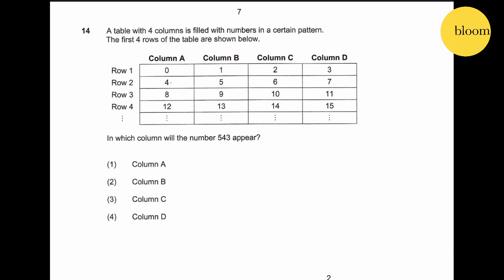So for column A, it can be directly divided by 4. Therefore let's try 543 divided by 4 - it gives us 135.75. Therefore column A cannot be the one.